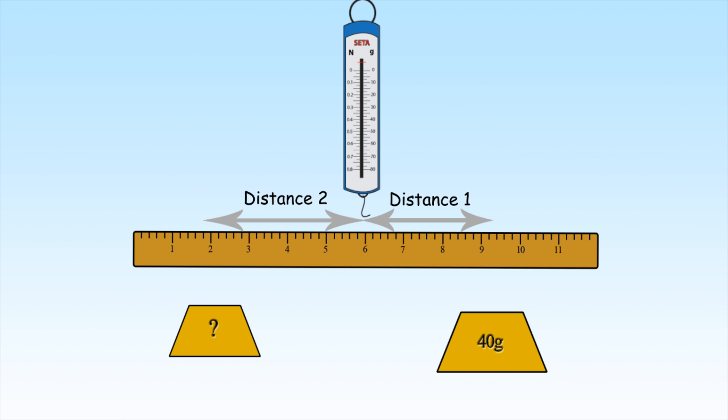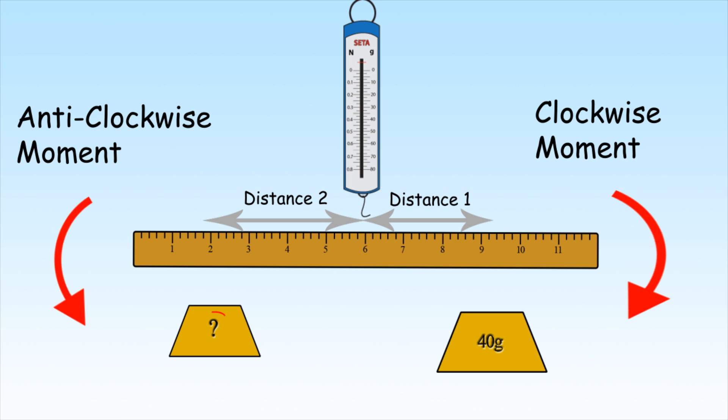Because the meter stick is balanced, the moment of force should be equal on both sides. Therefore, the only number missing is the mass of the second weight.